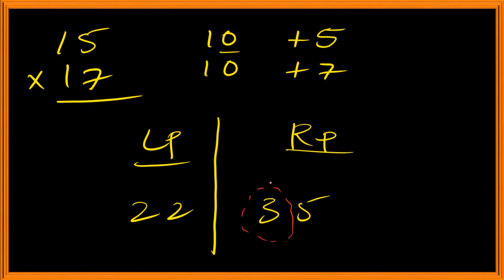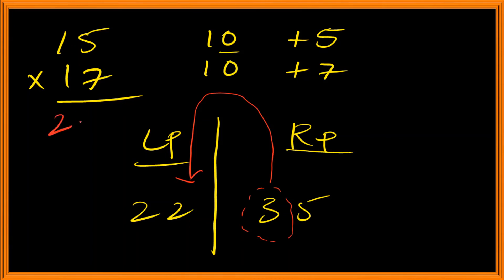We use the balancing or carry-over rule — refer to previous videos to learn that in detail. Applying it directly gives us the answer 255.